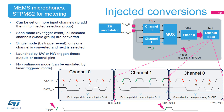Injected conversions have higher priority and can interrupt regular conversions immediately, starting just after being triggered. Any input channel can be assigned to an injected channels group. In scan injected mode, all channels in the group are converted from lowest to highest channel number when a trigger occurs. In single injected mode, only one channel is converted per trigger, with the next channel selected for the next conversion. Injected conversions can be launched by software or hardware from timers or an external pin, but cannot run in continuous mode — though this can be emulated using a periodic timer trigger.